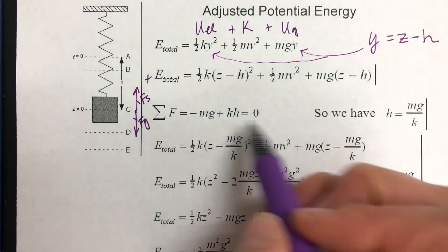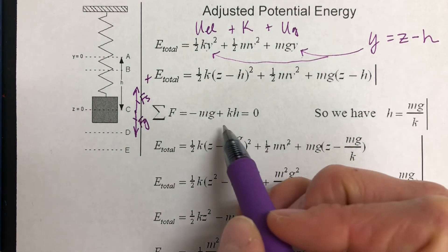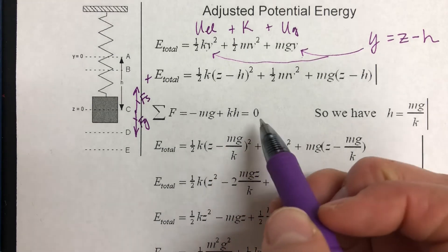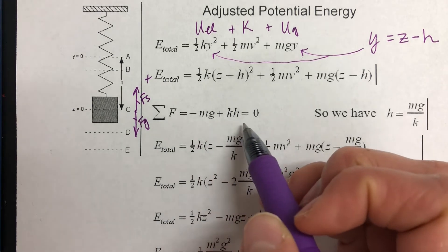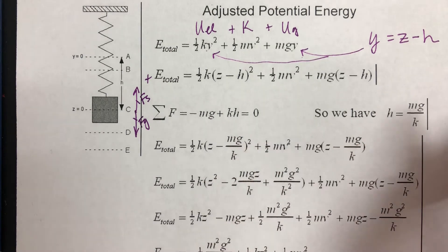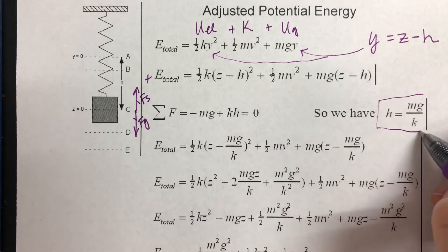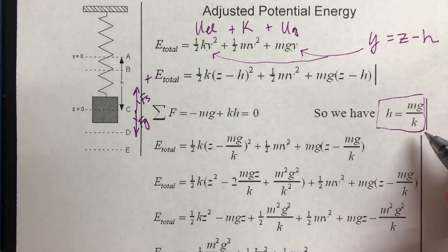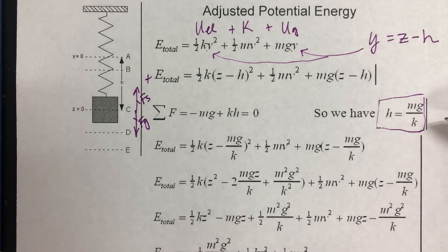So we can rearrange this. Because the net force is equal to zero, we know the gravitational force is equal to the spring force. And we can solve for h, and we get this statement here that h is equal to mg over k. And you could have done this in Hooke's law back last semester.